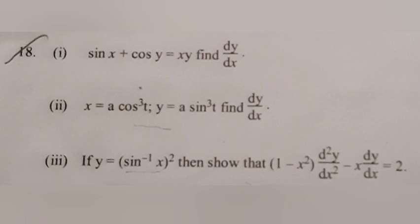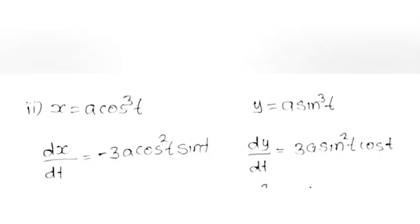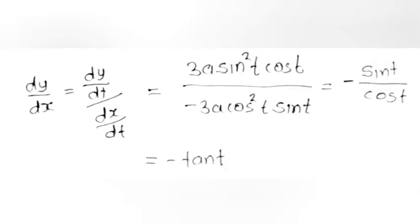Part 2. Given x = A cos³t, y = A sin³t, find dy/dx. dx/dt = −3A cos²t sin t. dy/dt = 3A sin²t cos t. dy/dx = (dy/dt)/(dx/dt) = 3A sin²t cos t / (−3A cos²t sin t) = −sin t/cos t = −tan t.